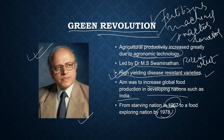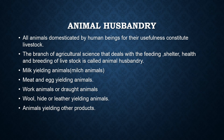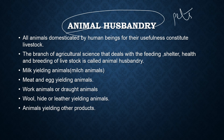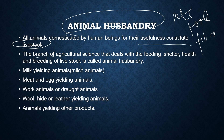Now we will move on to animal husbandry. Animals are useful to humans in many ways — some are kept as pets, some are used for food, and some provide fiber. All animals domesticated by human beings for their usefulness constitute livestock. The branch of agricultural science that deals with the feeding, shelter, health, and breeding of livestock is called animal husbandry.